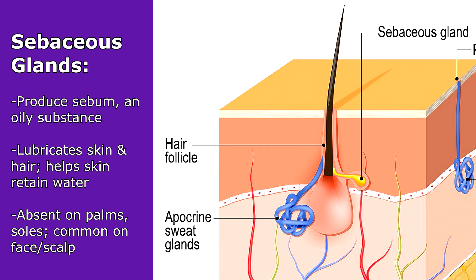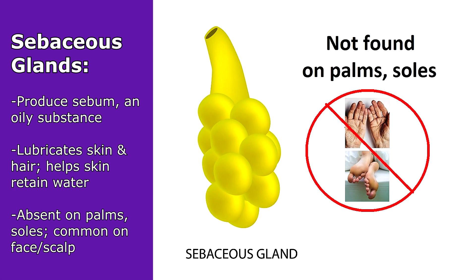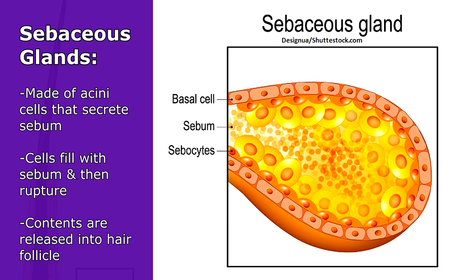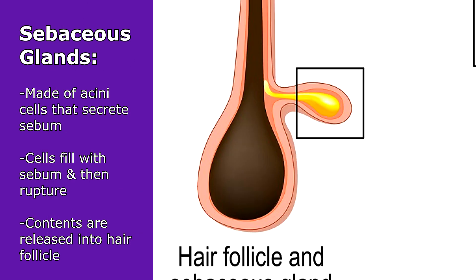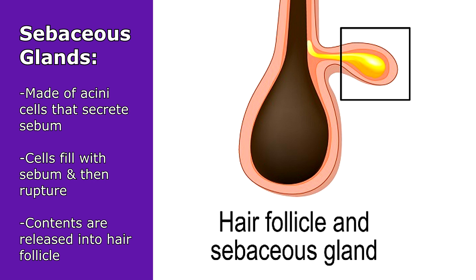Sebum also helps the skin to retain water. You'll notice that sebaceous and sebum both start with S-E-B, so that's an easy way to remember what these glands produce. Sebaceous glands are found throughout the skin, except for the palms of the hands and soles of the feet. These glands form in grape-like clusters, made up of acinar cells that eventually fill up with sebum, then rupture, releasing sebum into a small duct that connects to a main central duct, which generally empties into the hair follicle.